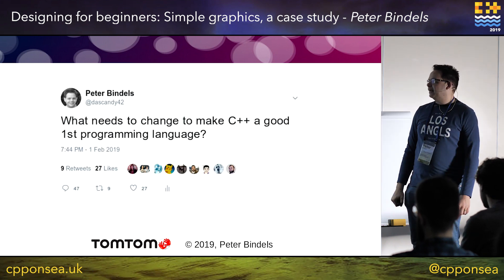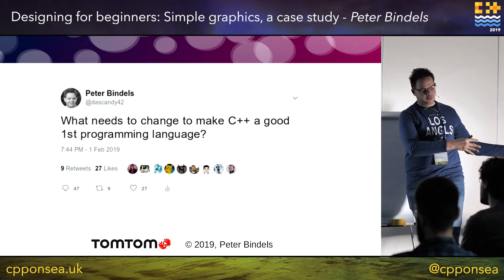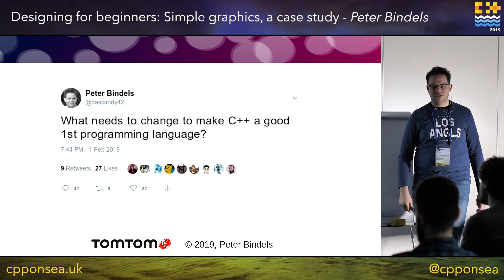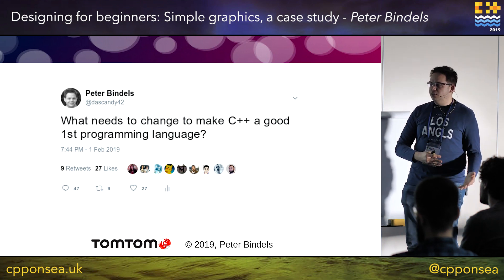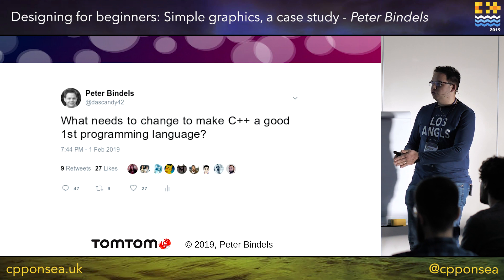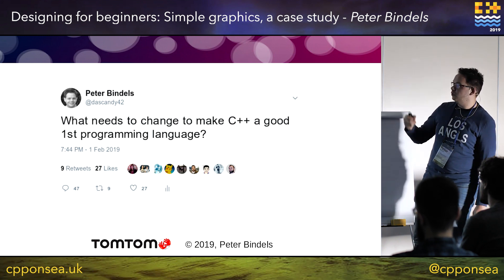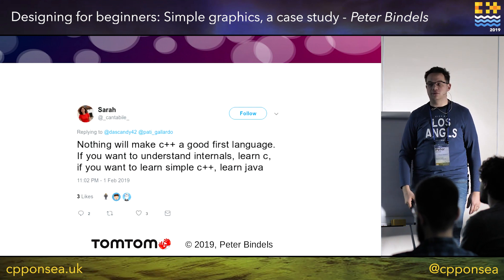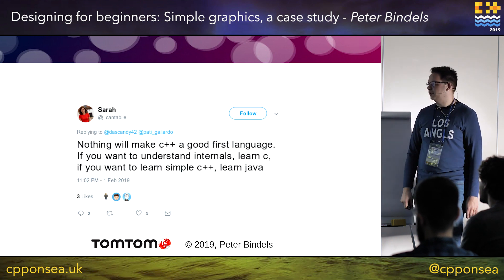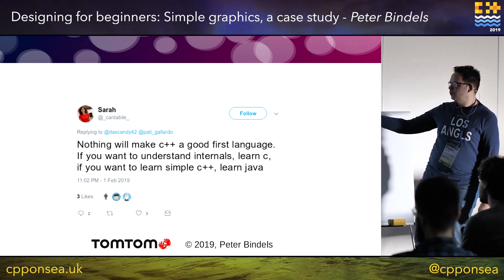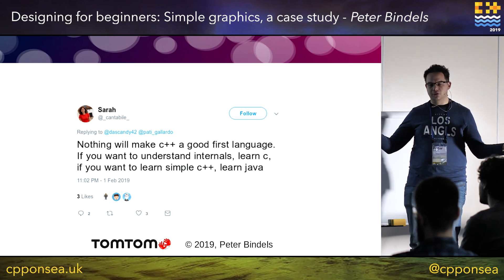That got me thinking: what needs to change to make C++ a good first programming language? I had it as basically a second language — how can we make this a good first language? I asked a question on Twitter and the replies were as you'd expect: 'It's ridiculous — if you want a good internal language, learn C; if you want simple C++, learn Java.'